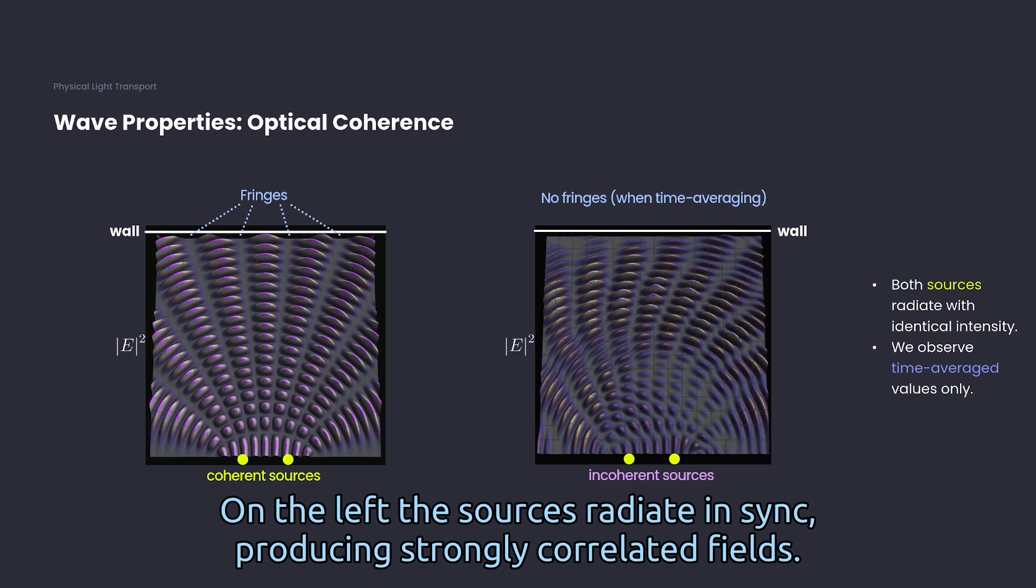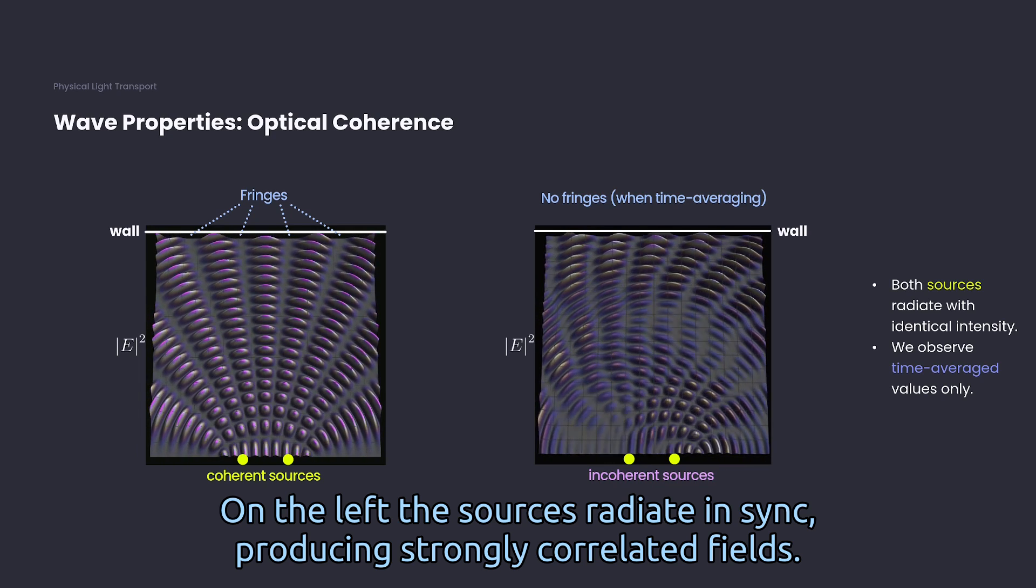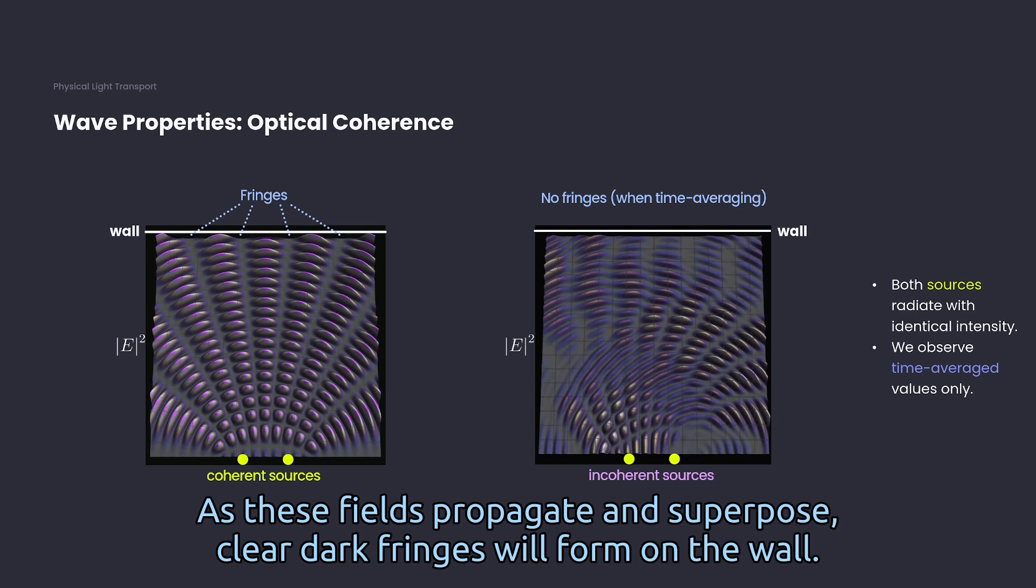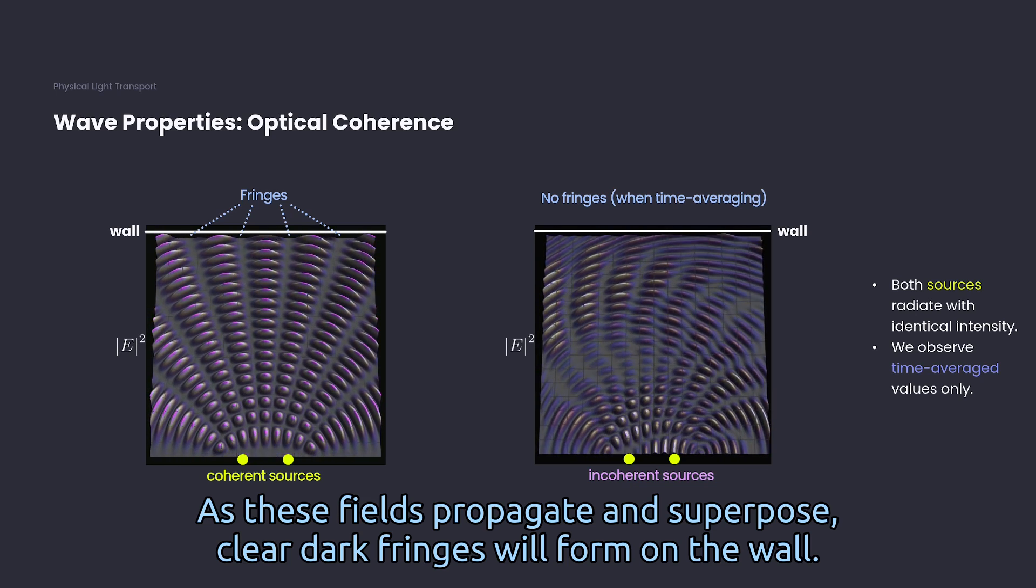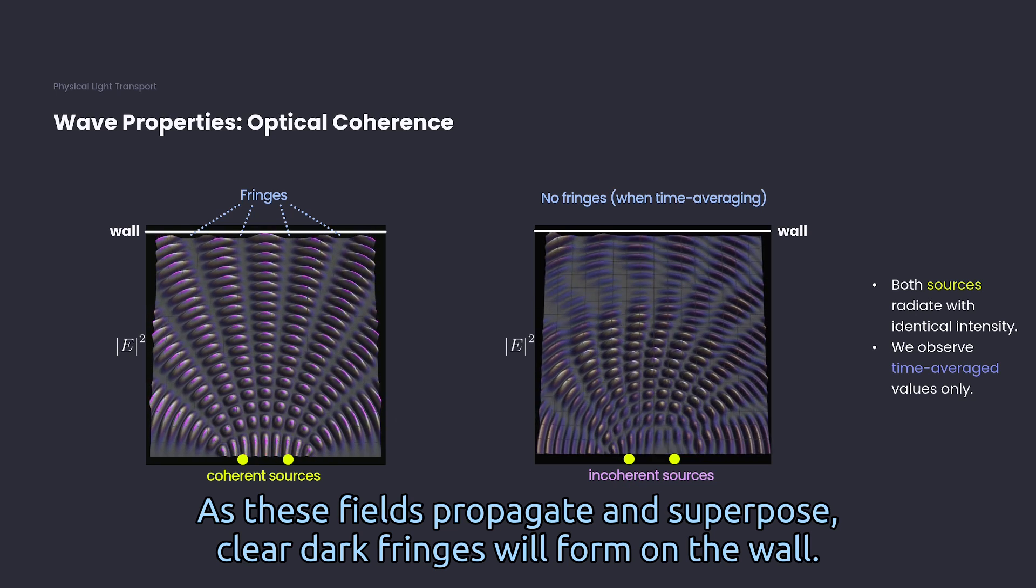On the left, the sources radiate in sync, producing strongly correlated fields. As these fields propagate and superpose, clear dark fringes will form on the wall.